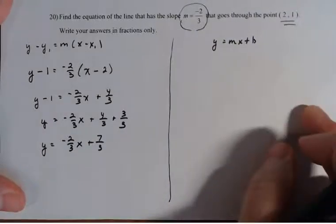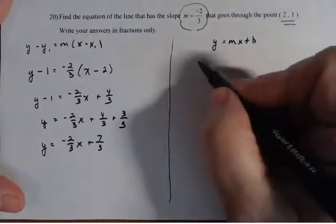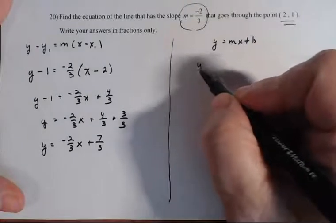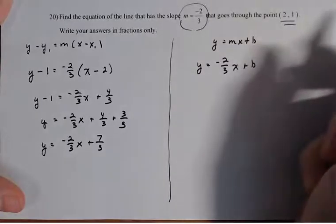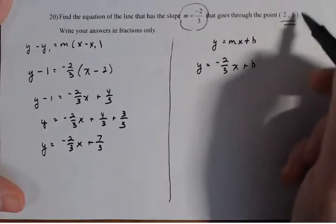Now let's see if we can get the same thing over here using Y equals MX plus B. So here, Y equals minus two thirds X plus B. Put the value for the slope in first and take the numbers in the ordered pairs.